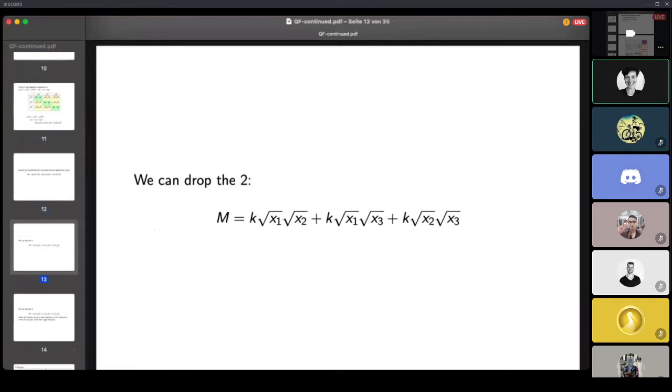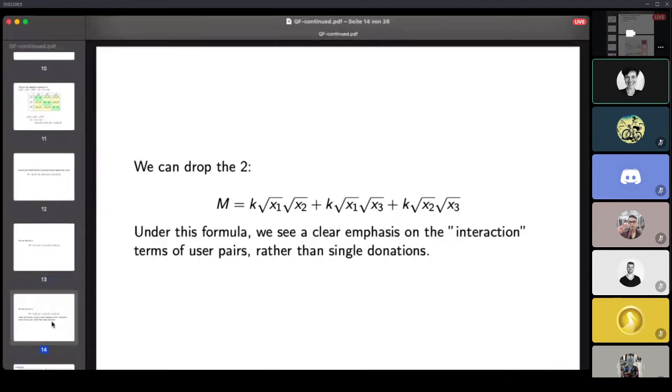So now the formula looks slightly different, but it's very similar. It's just that we've made a small algebraic modification. But if you go to the next slide - now philosophically, it looks different because now we're looking at interactions between pairs of users. We see that more clearly rather than single donations.